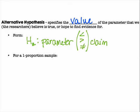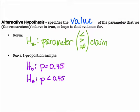If they don't lead you in one direction or the other — less than or greater than — then you're going to use not equal to. For a one proportion sample, using the same null hypothesis P equals 0.45, an example alternative hypothesis would be P is less than 0.45.